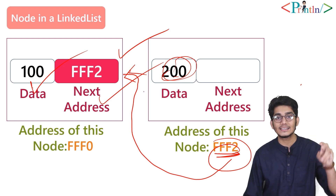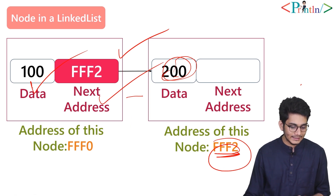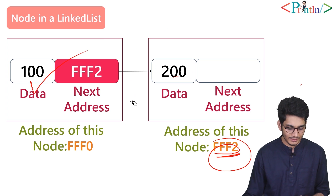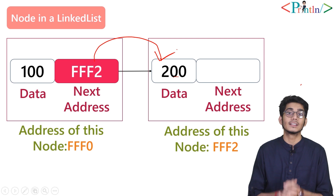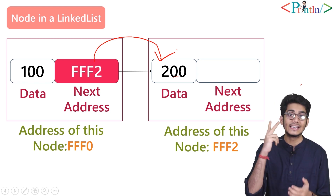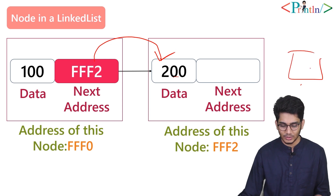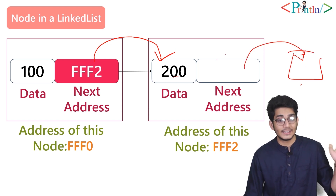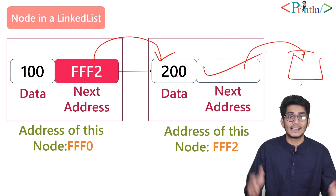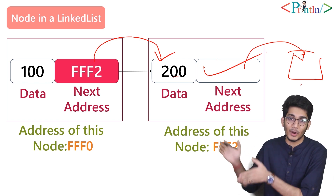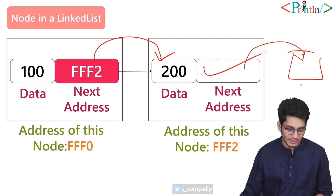This is how we link two nodes — the first node points to the second node. In memory, a node points to the next node. Until we insert another node, the last address of the node will be null. We need that null as a termination point; otherwise traversal would go into an infinite loop.